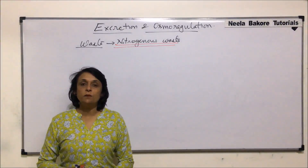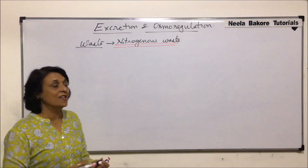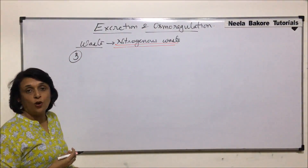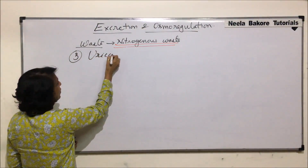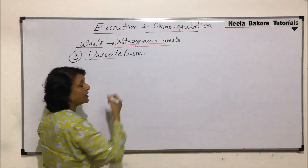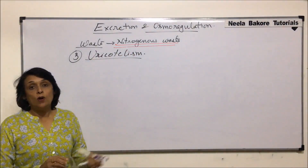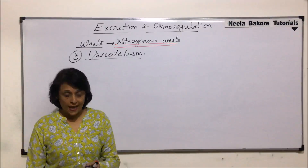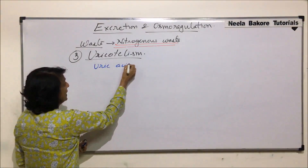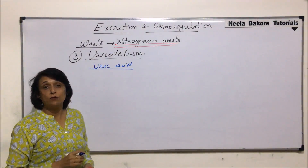In this segment we'll start with the third type of nitrogenous waste which needs to be eliminated, that is uric acid. Such elimination of uric acid is known as uricotelic, and organisms which excrete uric acid are known as uricotelic. How is uric acid formed? It is actually a complex process and requires a large amount of energy.